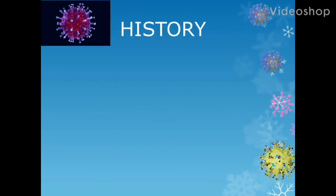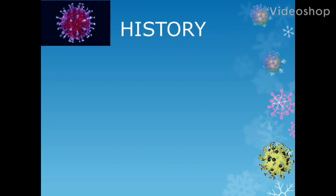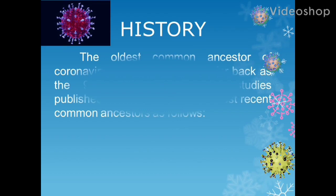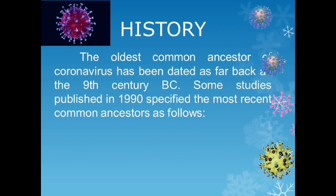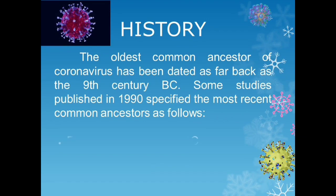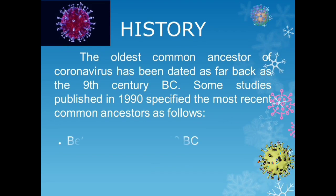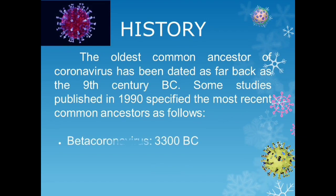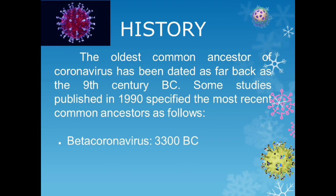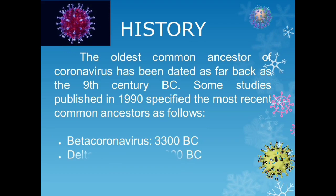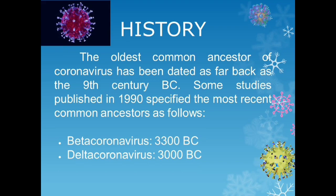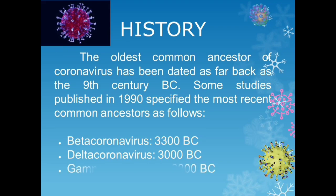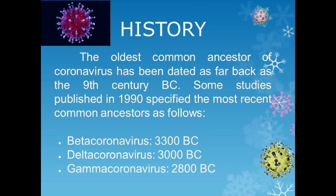History: The oldest common ancestor of the coronavirus has been dated as far back as the 19th century BC. Some studies published in 1990 specified the most recent common ancestors as follows: Beta coronavirus 3,300 BC, Delta coronavirus 3,000 BC, Gamma coronavirus 2,800 BC, and Alpha coronavirus 2,400 BC.